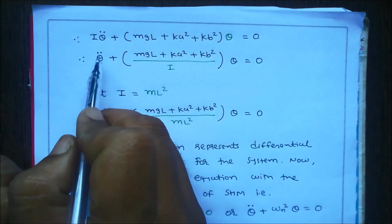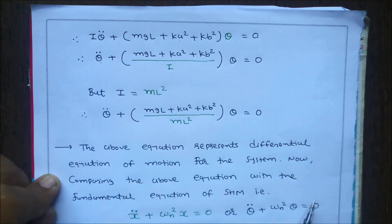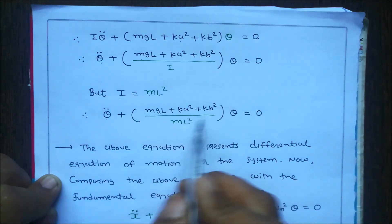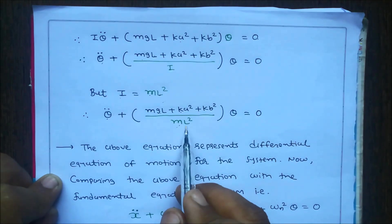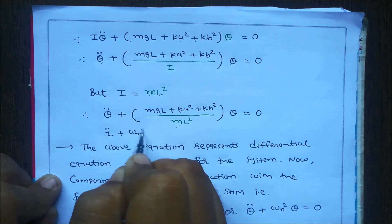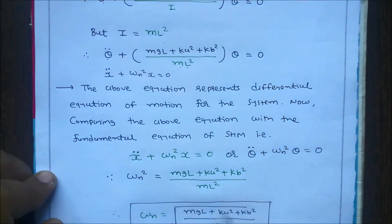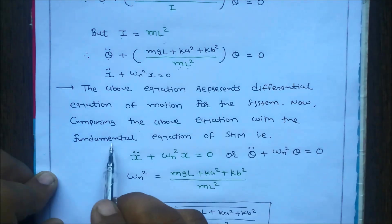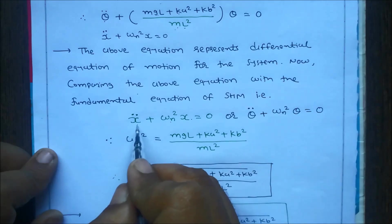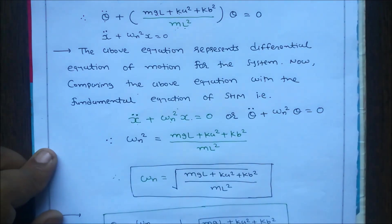Combining terms: I·θ̈ + (mg·l + k·a² + k·b²)·θ = 0. Dividing by I: θ̈ + (mg·l + k·a² + k·b²)/I · θ = 0. For a pendulum, moment of inertia I = m·l², so: θ̈ + (mg·l + k·a² + k·b²)/(m·l²) · θ = 0. This is the differential equation of motion for the system, similar to the SHM equation ẍ + ωn²·x = 0.